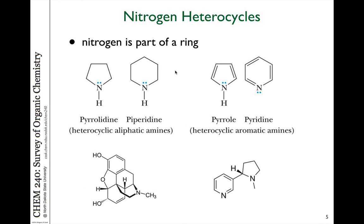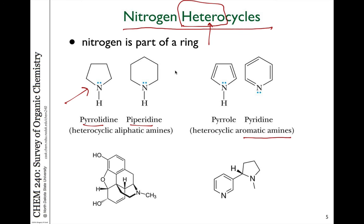Nitrogens can also be part of a ring. We refer to compounds that have nitrogen in a ring as nitrogen heterocycles — hetero meaning an atom that is not carbon. These can be aliphatic, such as pyrrolidine or piperidine (5- or 6-membered rings), or aromatic, such as pyridine or pyrrole. Many compounds with biological activity isolated from natural sources contain nitrogen heterocycles. For example, morphine has analgesic properties and contains a nitrogen heterocycle that is an aliphatic amine.